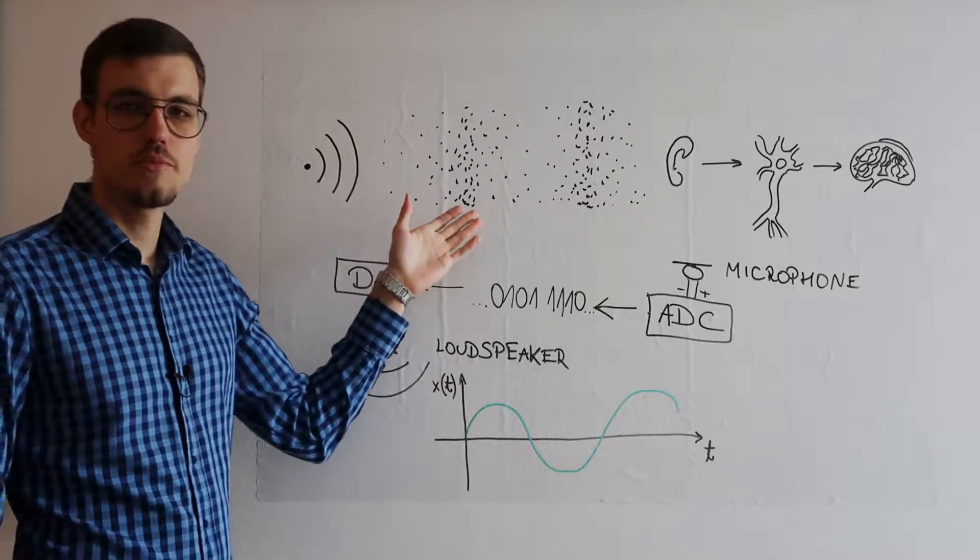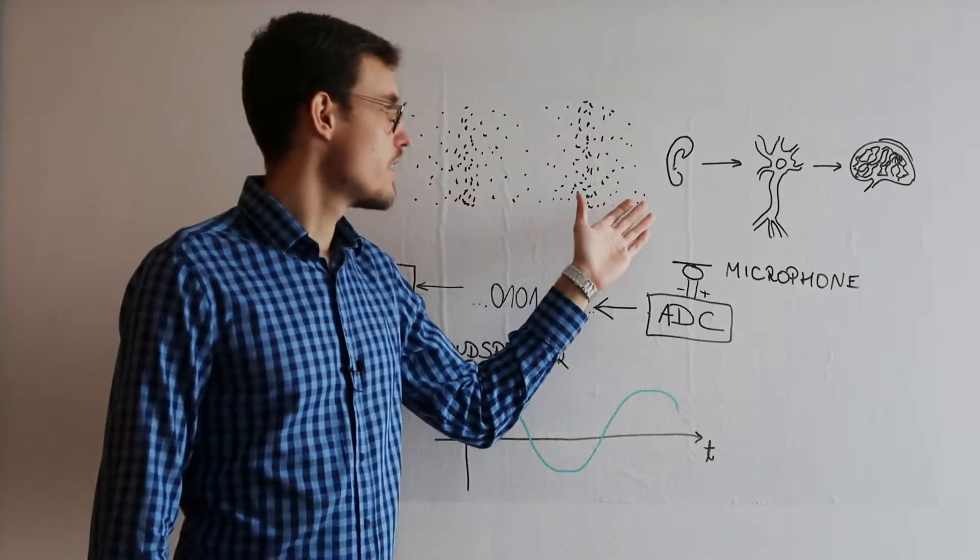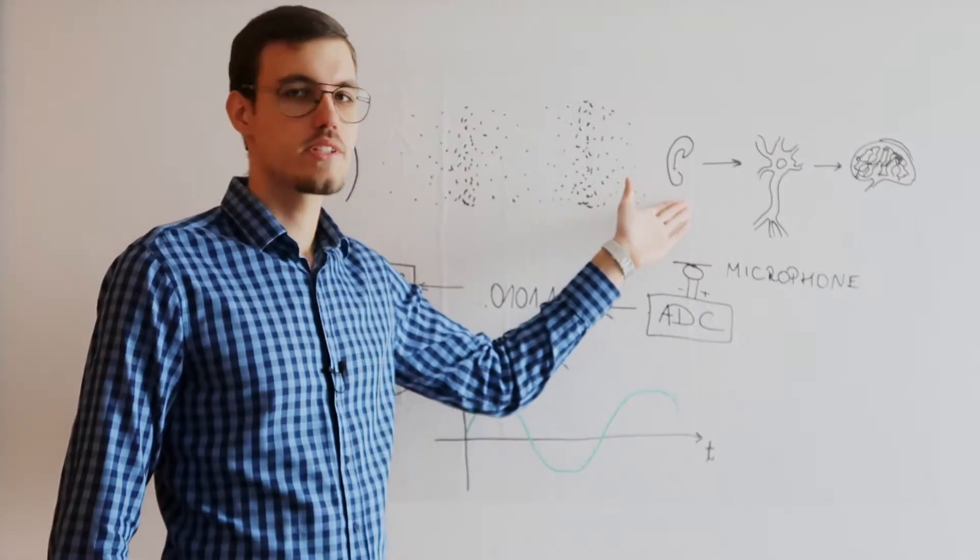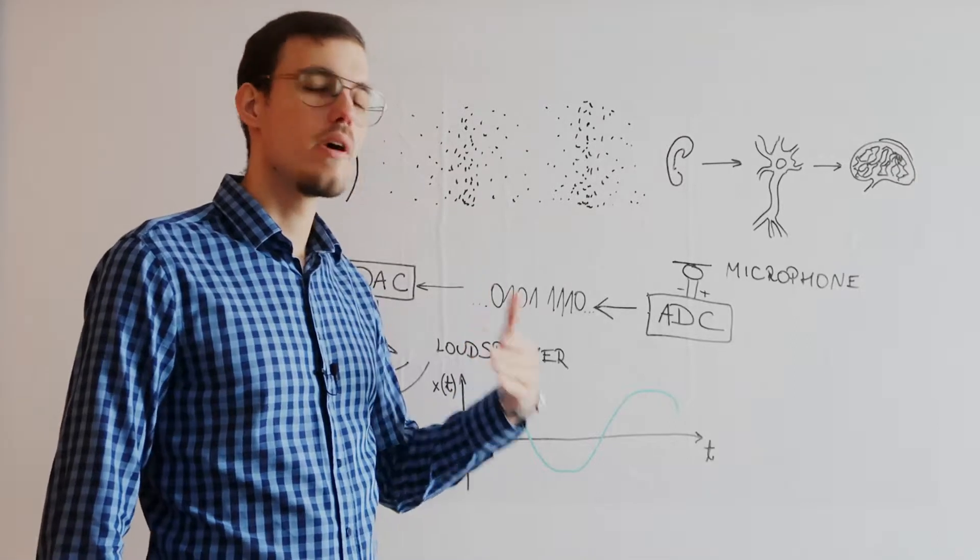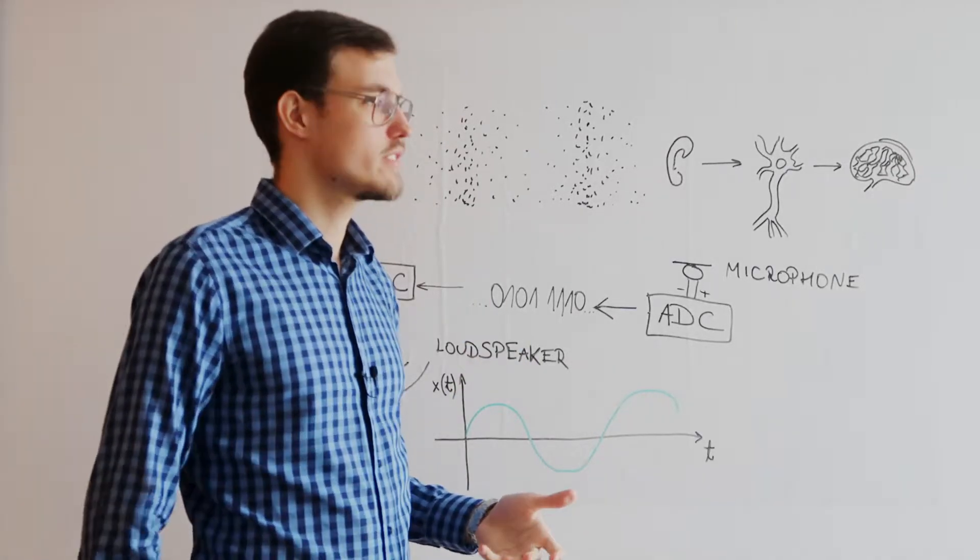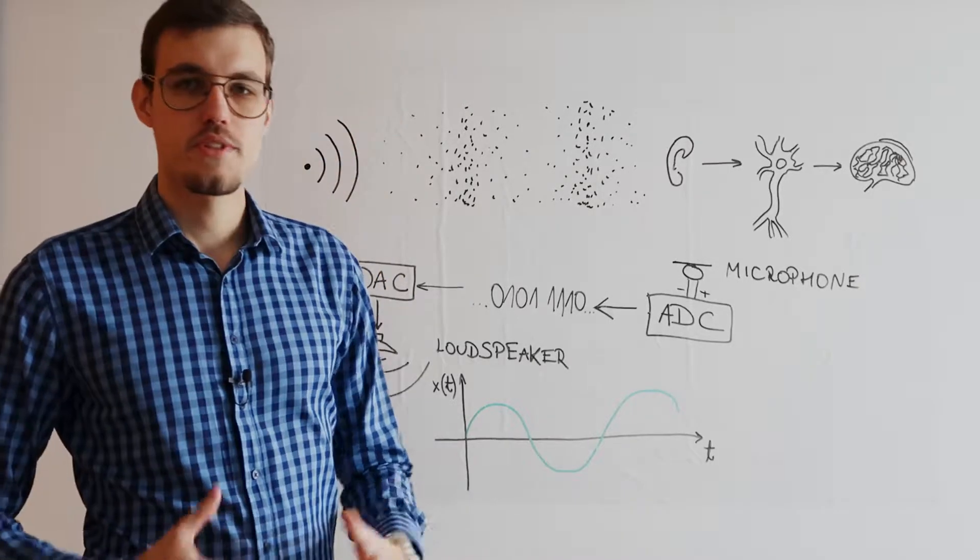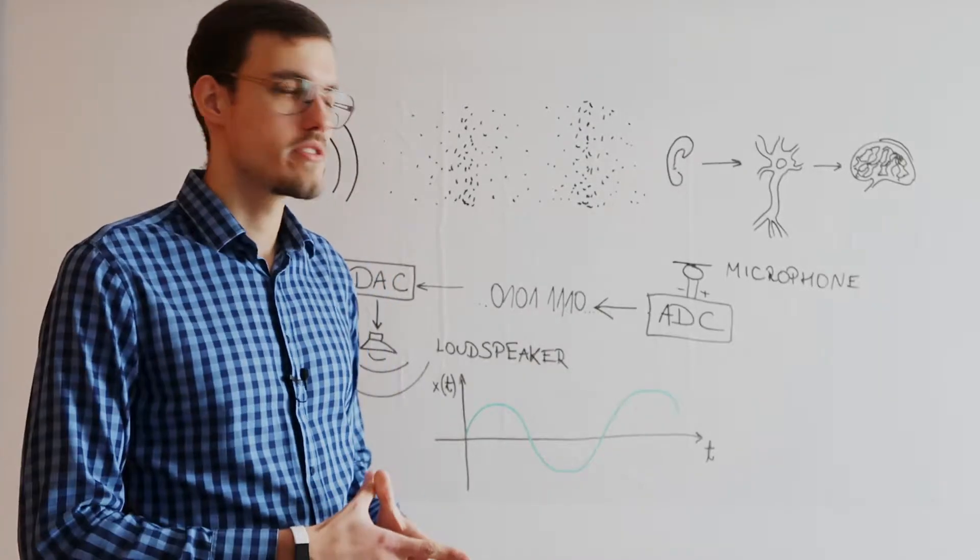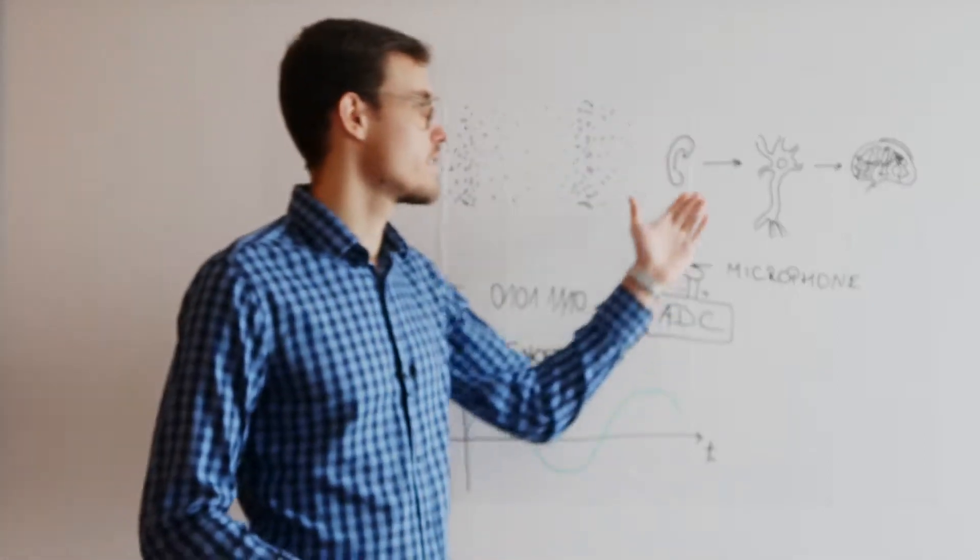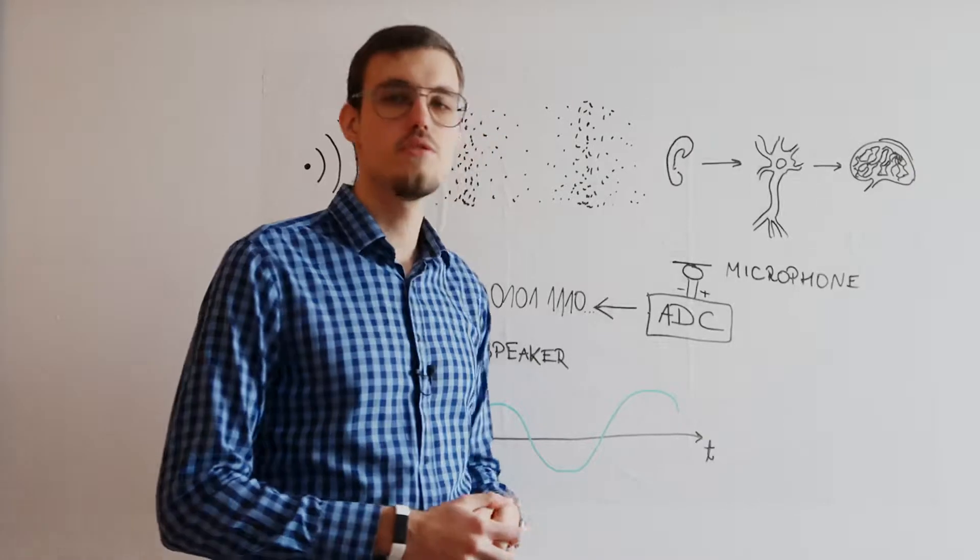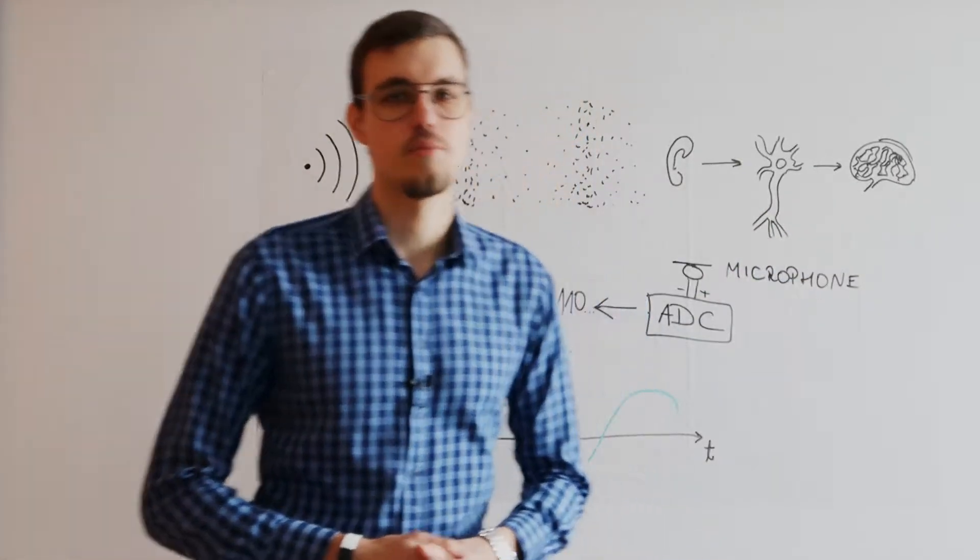This disturbance in the medium travels until it reaches, for example, our ears where the particles interact with our tympanic membrane. Then through a series of transformations, these vibrations are transformed into a neural signal which is transported through neurons directly into our brain where it is interpreted.